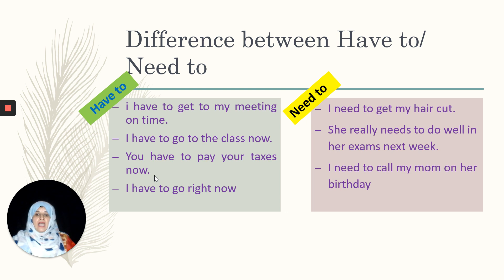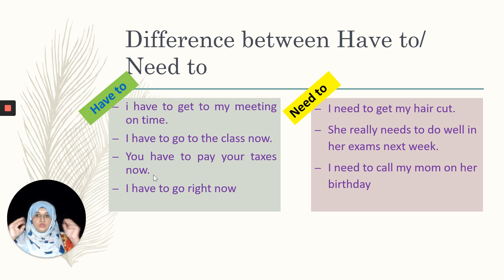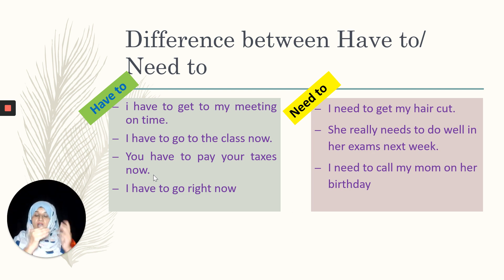Next example: I have to go right now — it means right now I have to move, otherwise I can face a problem. In all these examples you have seen that we make use of 'have to' to show the consequences of not doing that action. Now let's move towards examples of 'need to' and see how its usage is different from 'have to.'